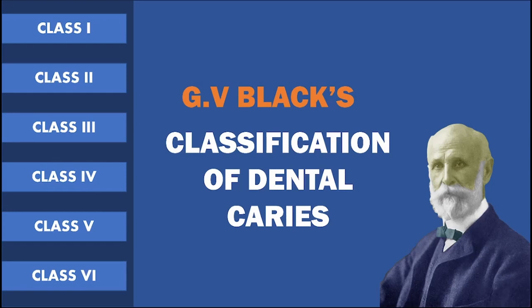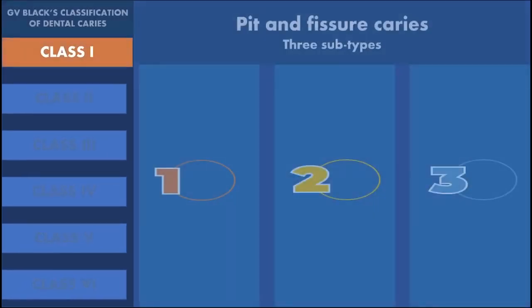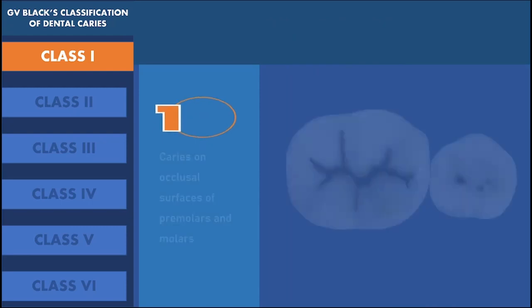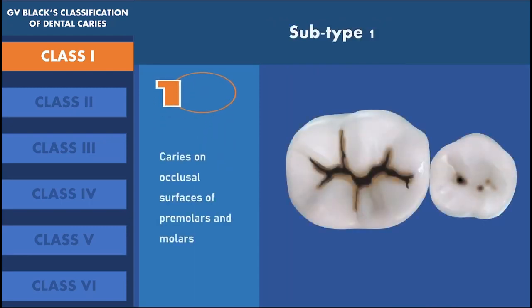In this presentation, let's see about all these classes in detail. Starting with class 1, which is the pit and fissure caries. All pit and fissure caries are categorized as class 1 dental caries. It has been subdivided into 3 subtypes: subtype 1, 2, and 3. Subtype 1 states that the caries which occurs on the occlusal surface of premolars and molars.